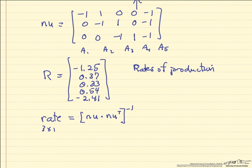The stoichiometric coefficient times the transpose of the stoichiometric coefficient, take the inverse of that, multiply by the stoichiometric coefficient, multiply by the matrix for rates of production.